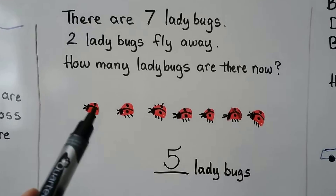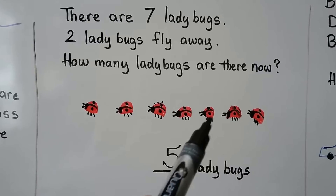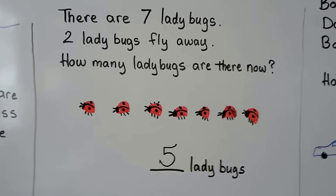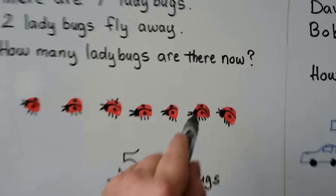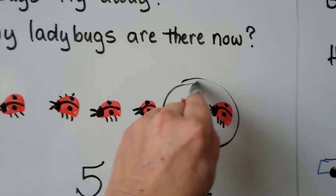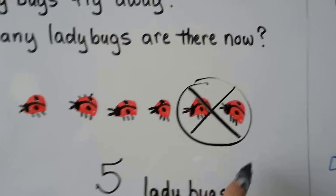There are seven ladybugs — one, two, three, four, five, six, seven. Two fly away, so we circle them and cross them out.